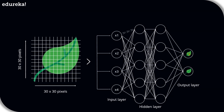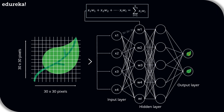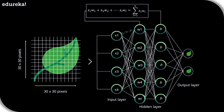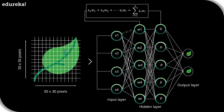As the input is passed from the input layer to the hidden layer, an initial random weight is assigned to each input. The inputs are then multiplied with their corresponding weights and their sum is further processed through the network. A numerical value called bias is assigned to each perceptron. Furthermore, each perceptron is passed through an activation or transformation function that determines whether a particular perceptron gets activated or not. An activated perceptron is used to transmit data to the next layer.